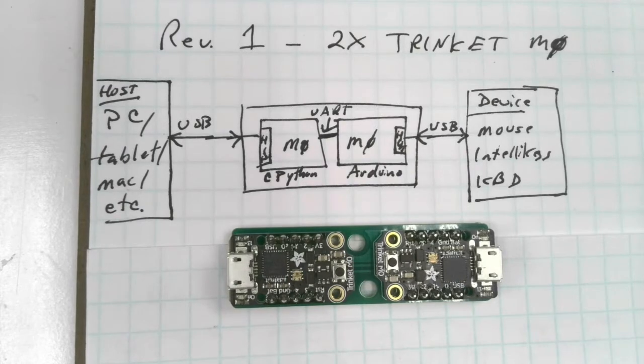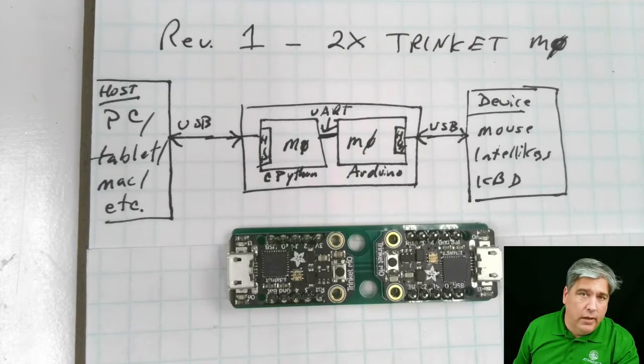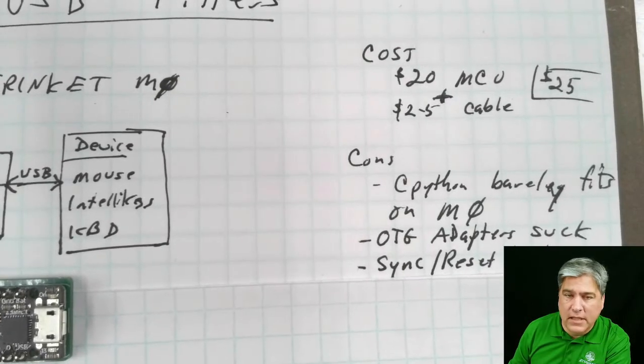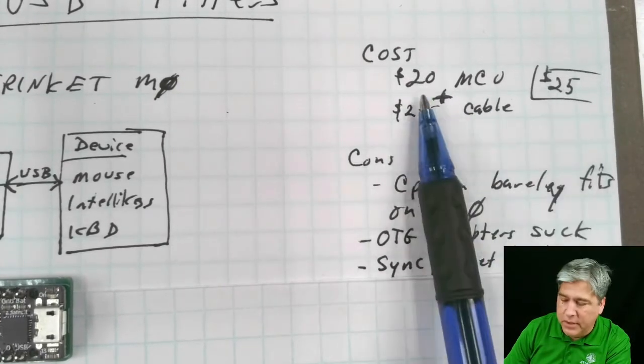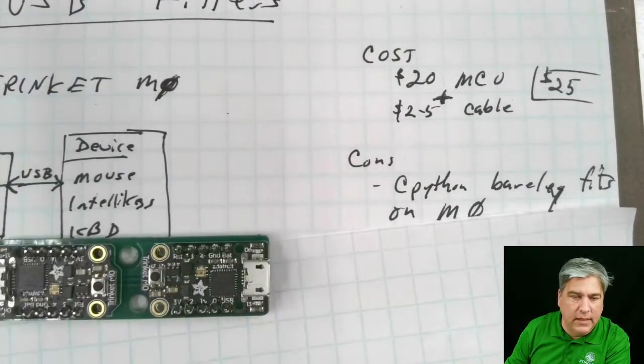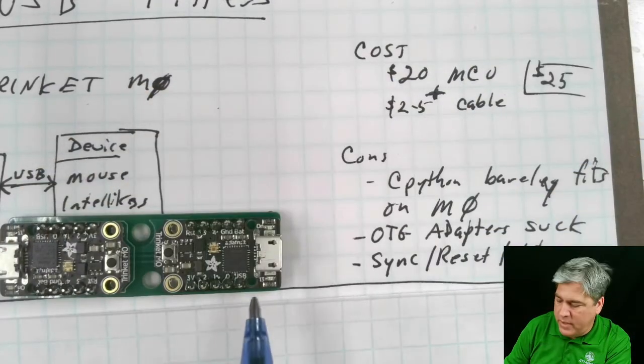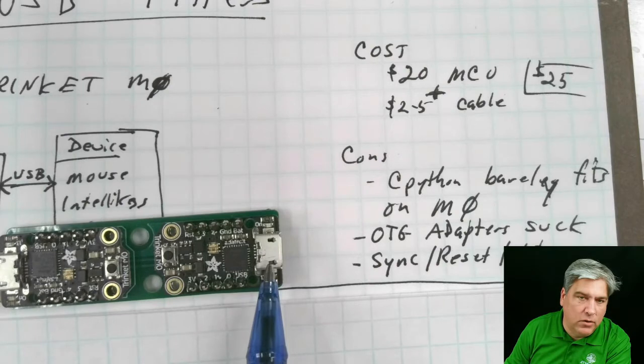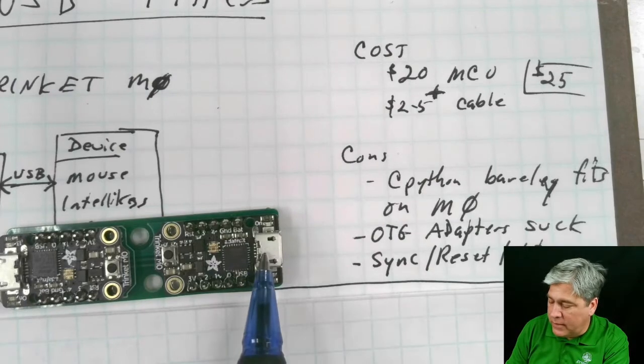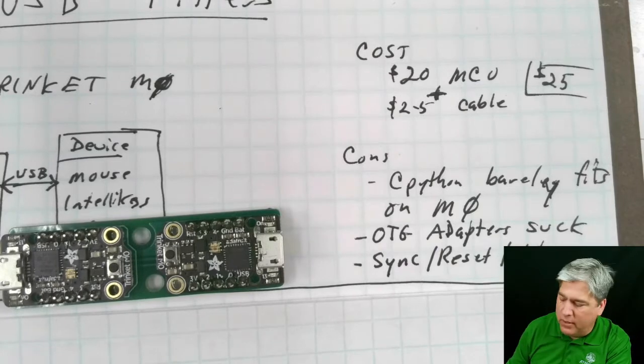That's how this device worked. And it really kind of works really well. There's not anything inherently wrong with the design of this. There are just some limitations in the hardware that cause some issues. The cost is actually pretty good. It costs about $25, $20 for the two microcontrollers and then $2 to $5 for the cables.